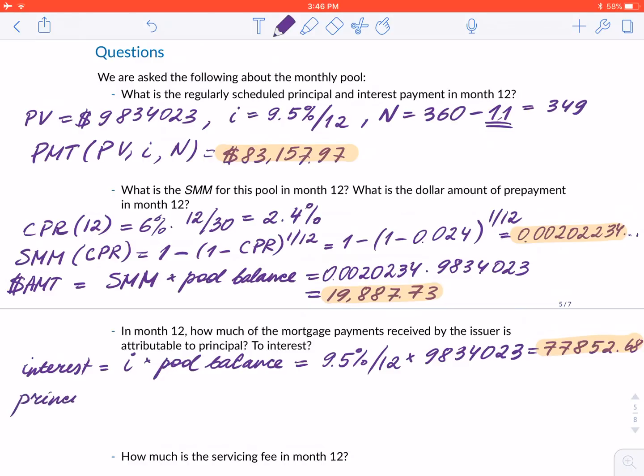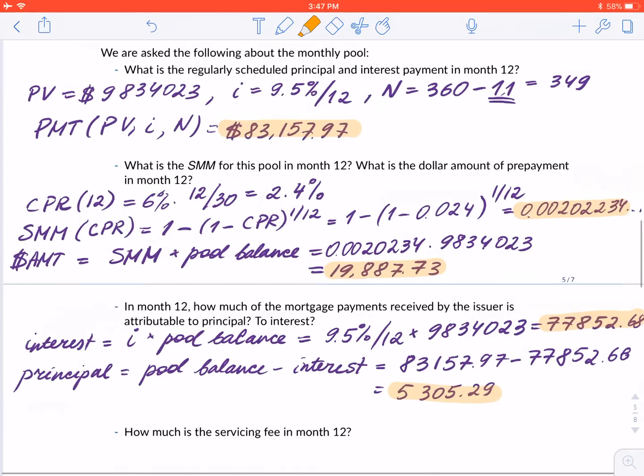Now for the principal. We know that the payment of $83,000 contains the principal and the interest, so the principal is just the remaining portion. Let me write this down in case you made a mistake before: principal = payment - interest. So that's $83,157.97 - $77,852.68 = $5,305.29.